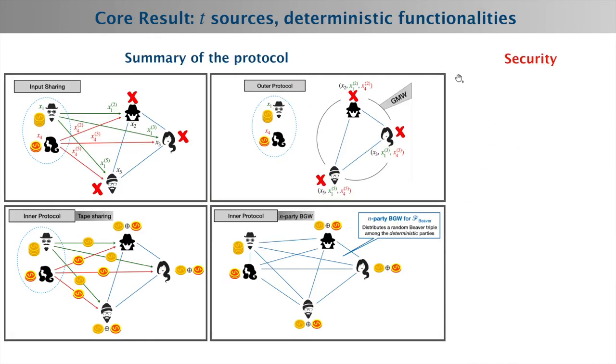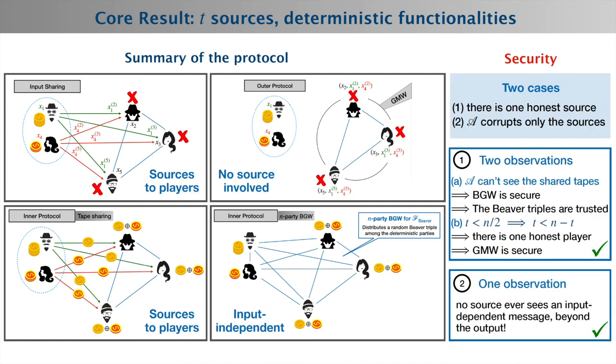For our first result, I'm giving a high-level protocol summary. The key idea is to ensure that the sources never see anything private during the protocol—anything that depends on the private inputs—so that when the adversary corrupts all the sources, they cannot see anything non-trivial about the inputs.